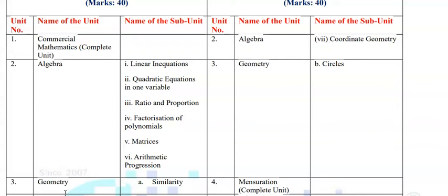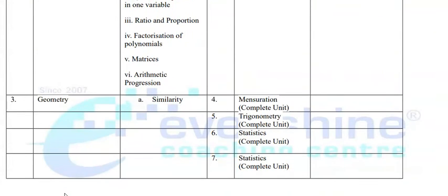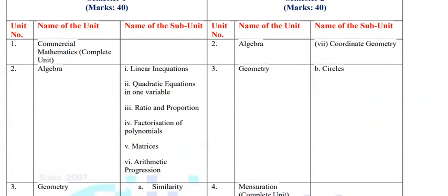We are going to show you in detail which chapters and topics you have to study, and which exercises you need to prepare for the upcoming board exam. In Algebra, you have to study linear inequations, quadratic equations in one variable, ratio and proportion, factorization of polynomials, matrices, and arithmetic progression. In Geometry, you are going to study only similarity — only problems related to similarity for Semester 1.